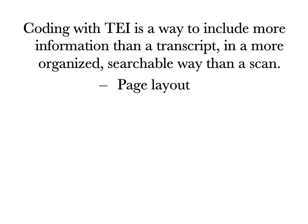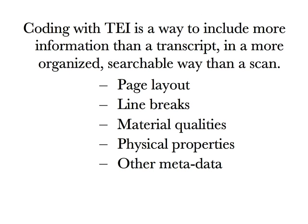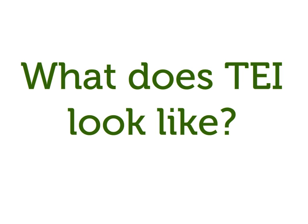This is where the Text Encoding Initiative comes in. Using code to mark up the book makes it possible to include more information than just the text itself. You can add formatting, context, and metadata in the tags. All the details that get lost in a plain transcription can be added with TEI. Since TEI was developed specifically for literary texts, its structure and vocabulary are well-suited to this kind of project.